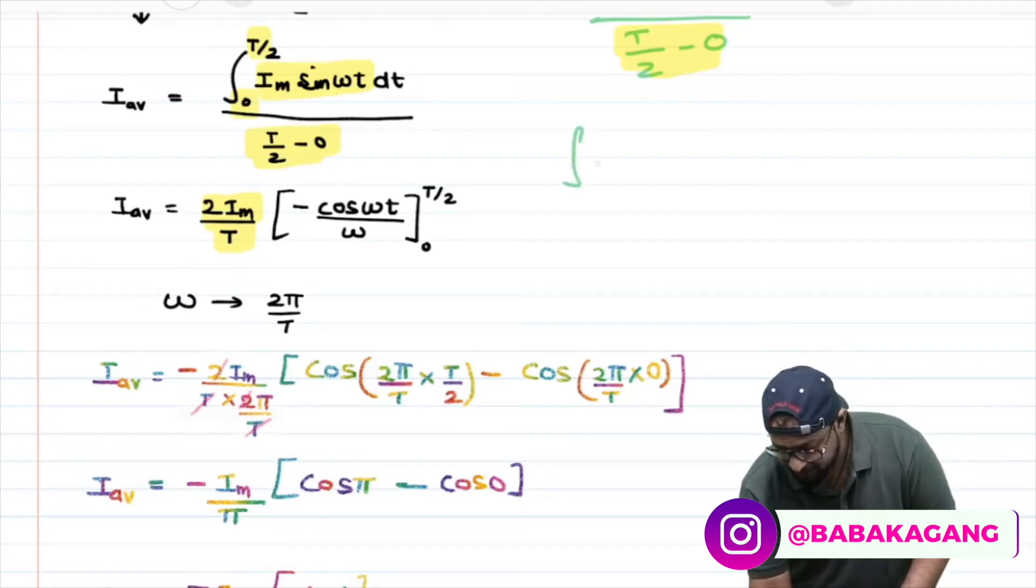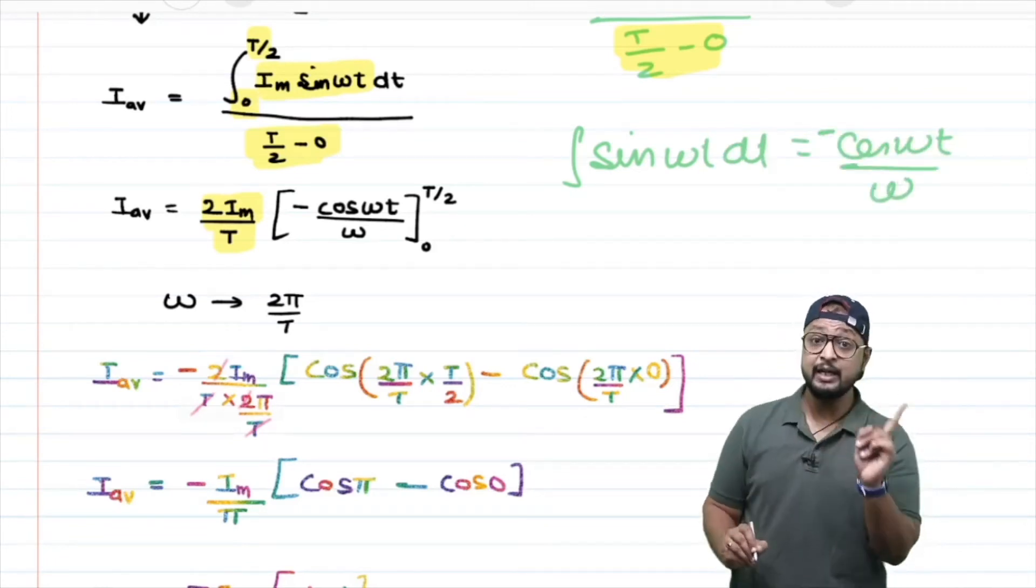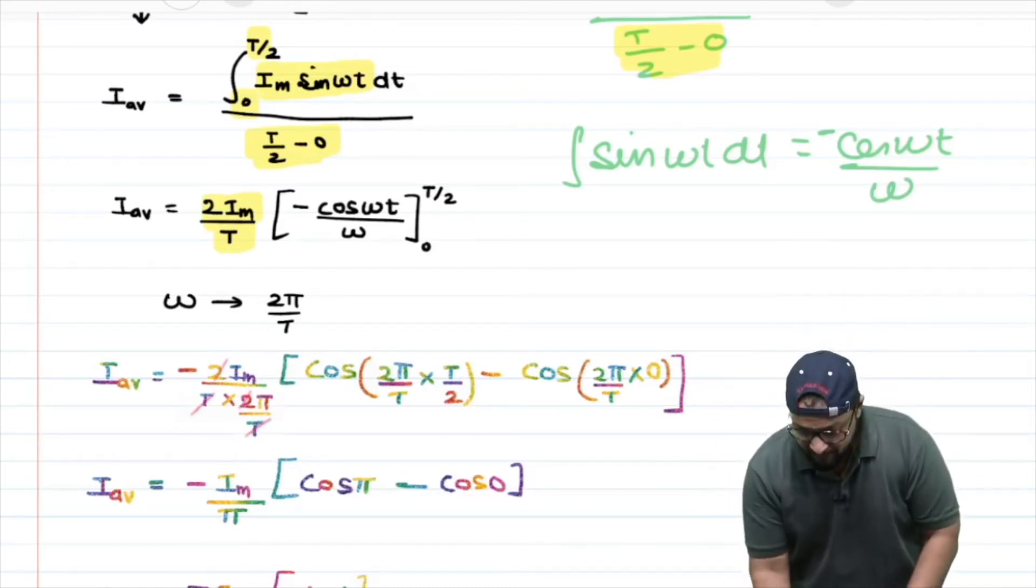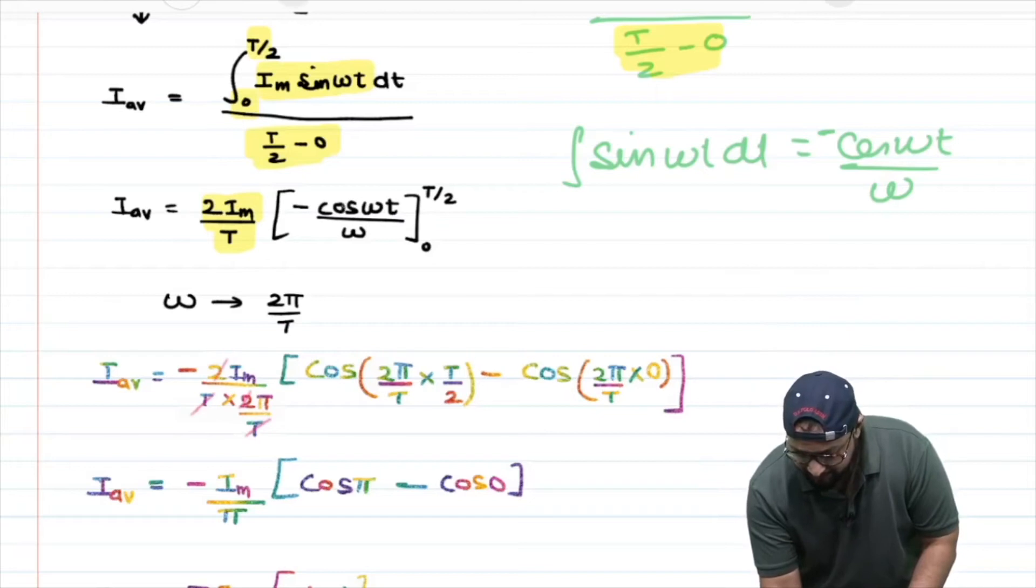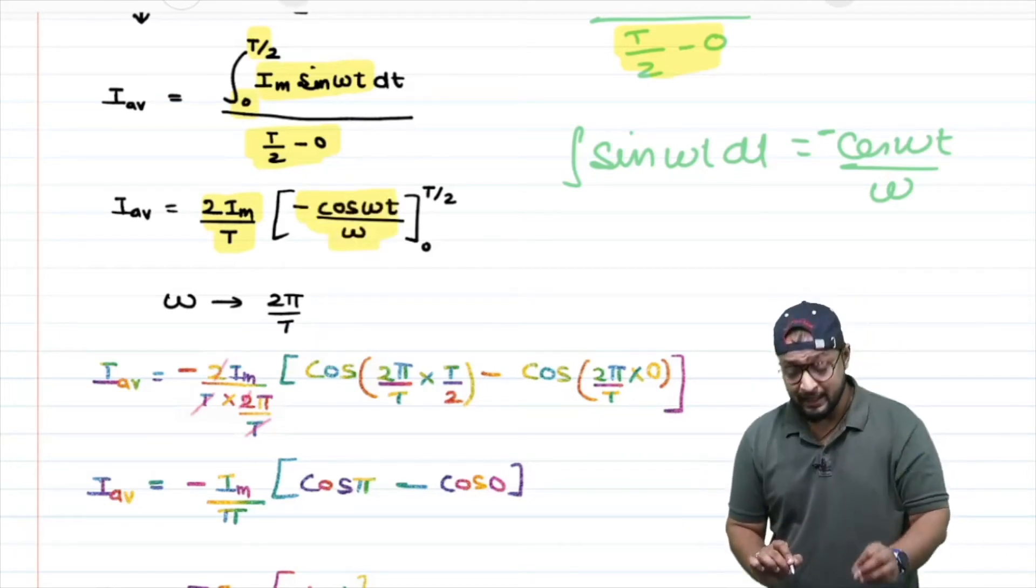Integration of sine we've done before. We wrote it as minus cos(ωt). If you don't remember: the integration of sin(ωt) is -cos(ωt) divided by ω, because ω is constant with t.